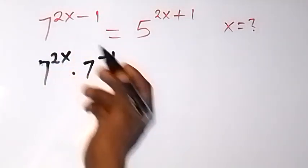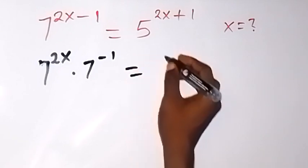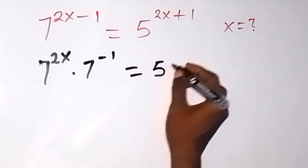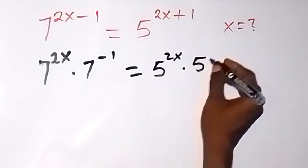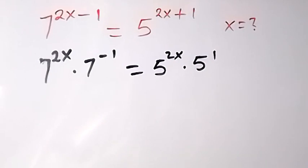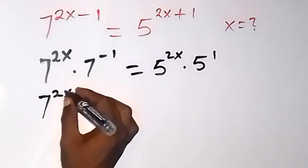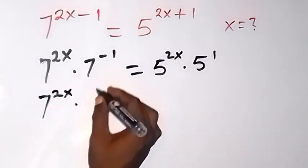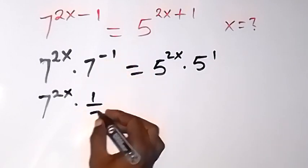When we separate this using the law of indices, then equals to on this side we have 5 raised to power 2x times 5 raised to power 1. Also from there we can write it again and say this is 7 raised to power 2x times — since it is a negative power — we can write it as 1 over 7.